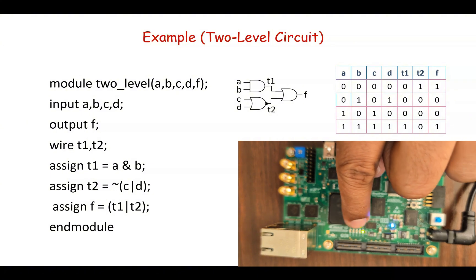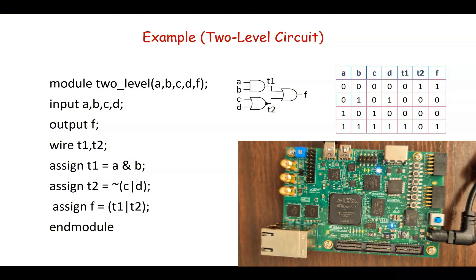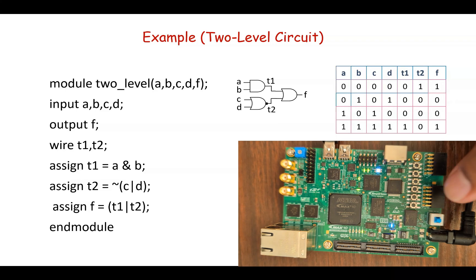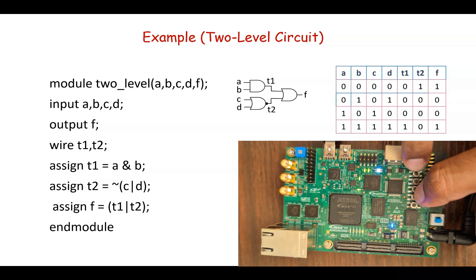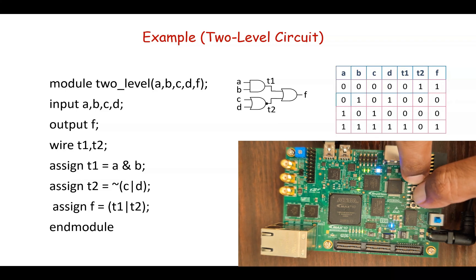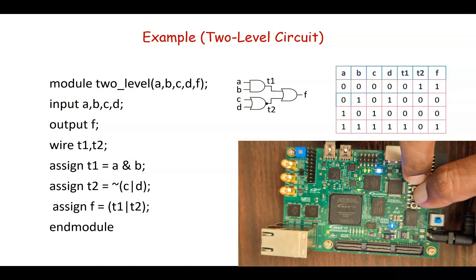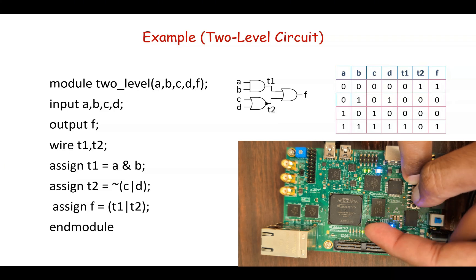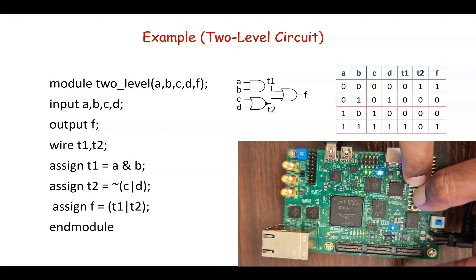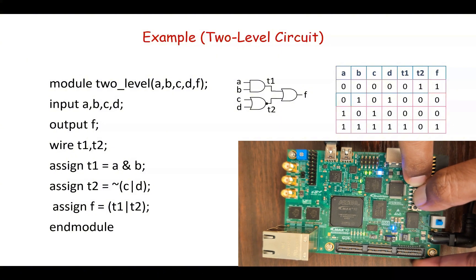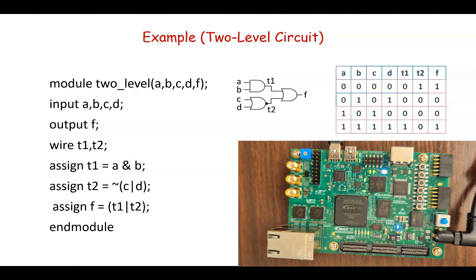Now if we press all of these switches, then the input will be 0 for a, b, c and d, and the output should be high. So if we press all of the switches you can see the LED is still on. So it verifies this.